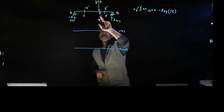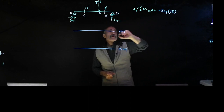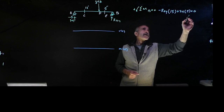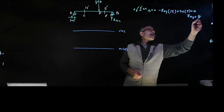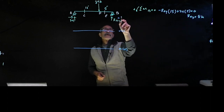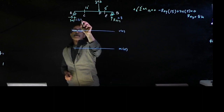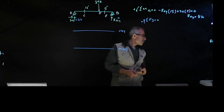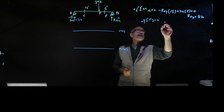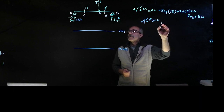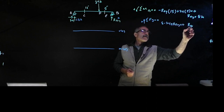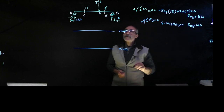Nothing else until the 24 kip load, which takes a counterclockwise moment — positive. So plus 24 times 5 equals 0. RAY comes out to be 8 kips. Then doing summation of forces in Y equals 0: 8 minus 24 plus RBY equals 0, so RBY equals 16 kips.